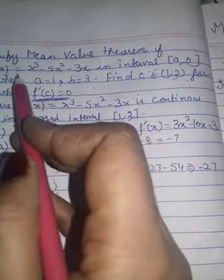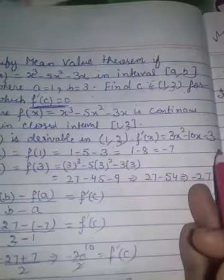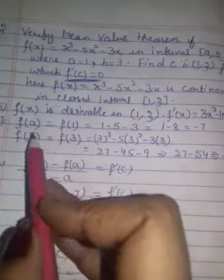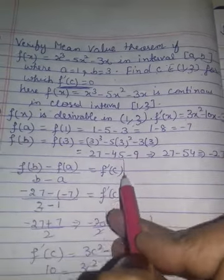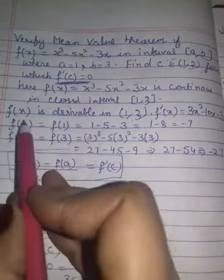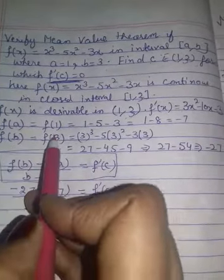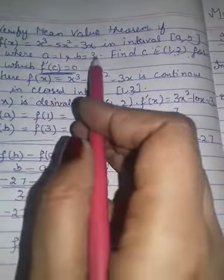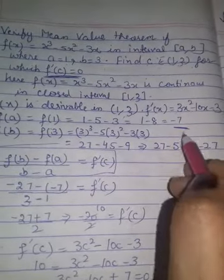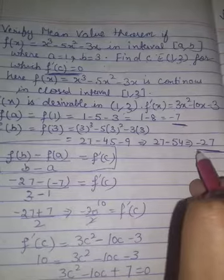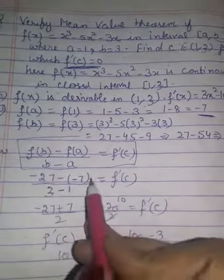Then you know there exists c such that this will be here. But I will find firstly f(a) and f(b). You know a is 1, b is 3. After putting we are getting f(a) is -7, f(b) is -27. I put the values.